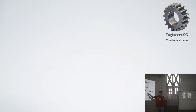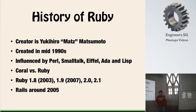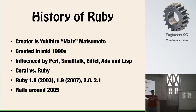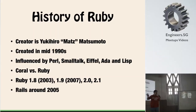Ruby is influenced by his love for many other programming languages — like Perl, Smalltalk, Eiffel, Ada, and Lisp. As a trivia, Ruby could have been called Coral instead. I can't remember the exact story — I think it's because Ruby is the name of a friend's daughter or something like that.